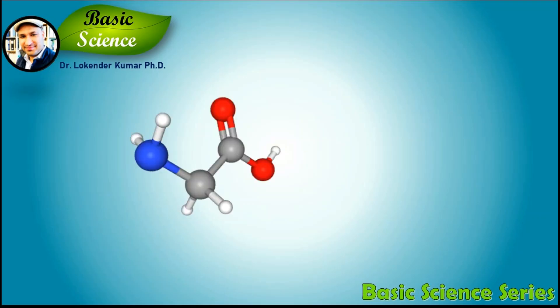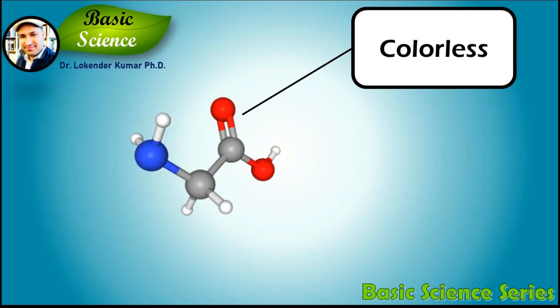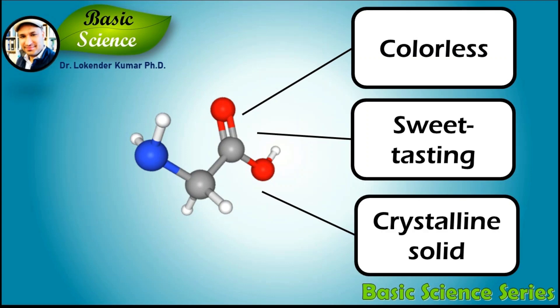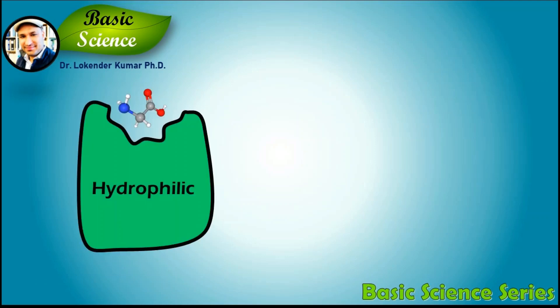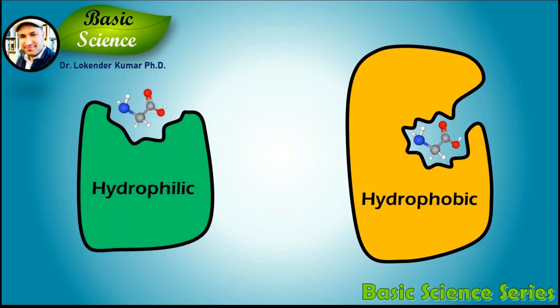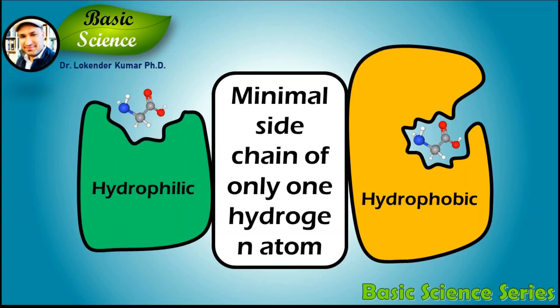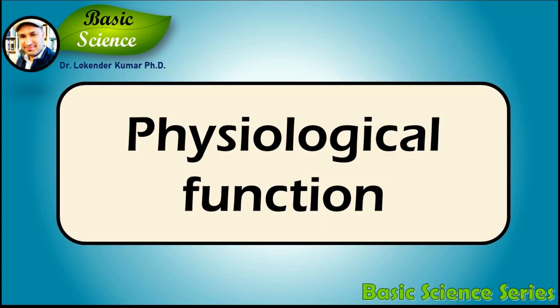Glycine is a colorless, sweet-tasting crystalline solid. Because of its sweet taste, it is named glycine. It can fit into hydrophilic or hydrophobic environments due to its minimal side chain of only one hydrogen atom.